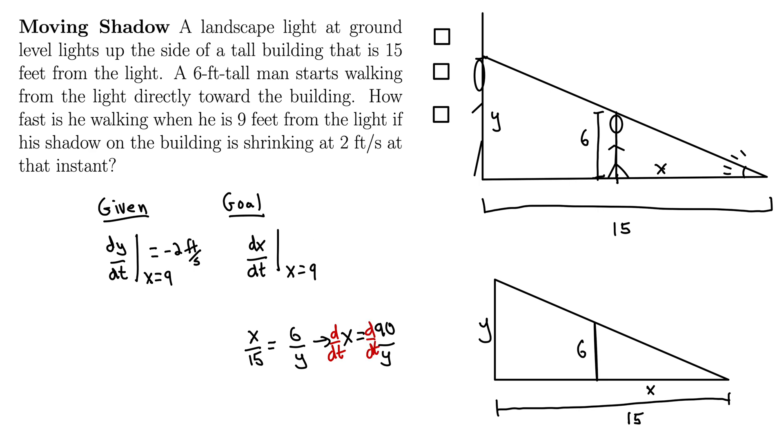So that gives us dx/dt equals—so this is Y to the negative one. So when we take that derivative, we get negative 90 over Y squared, dy/dt. There's our chain rule.